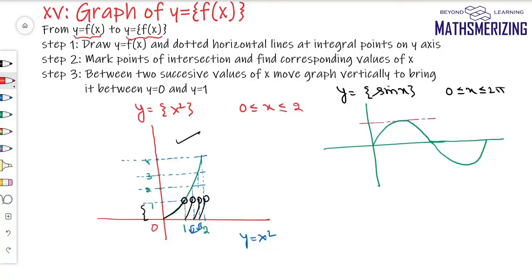I'll draw horizontal lines at y = 1, 0, and −1. When sin x is an integer, the fractional part is 0, so for all those points I'll mark the corresponding point on the x-axis as 0. The key x values are 0, π/2, π, 3π/2, and 2π.